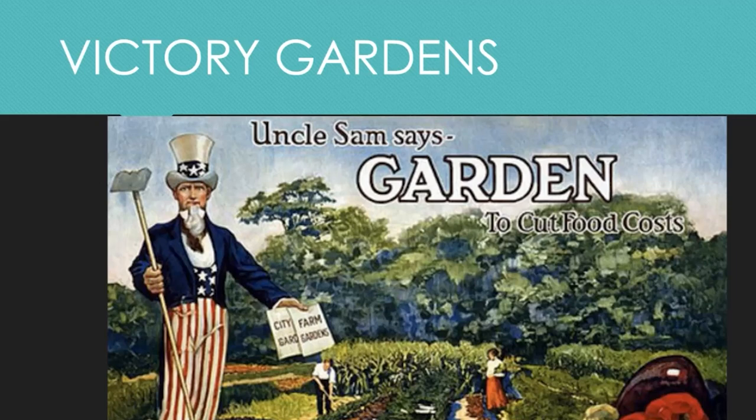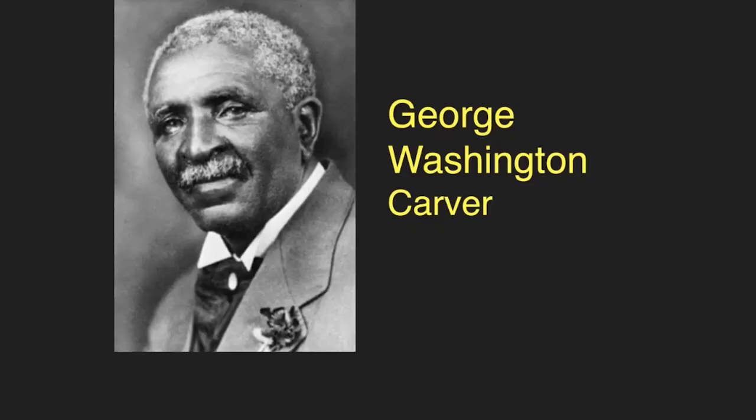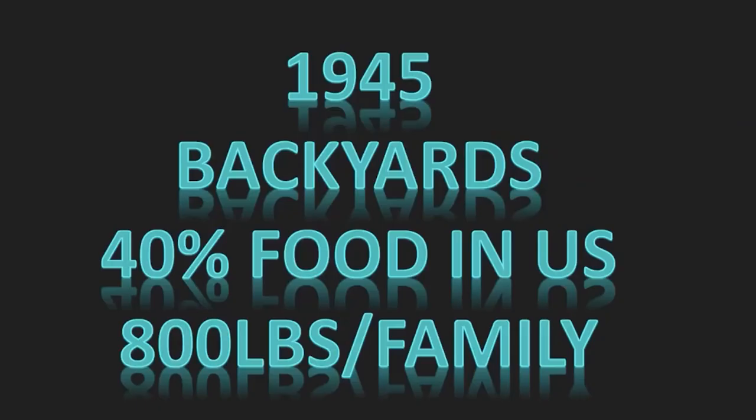They were originally called War Gardens, but thanks to — and this is anecdotal — the writings of Dr. George Washington Carver on the victory of gardening, they were changed into the now more appropriate Victory Gardens. In 1945, 40% of the food in the United States was provided by these Victory Gardens, with an average of 800 pounds per family.